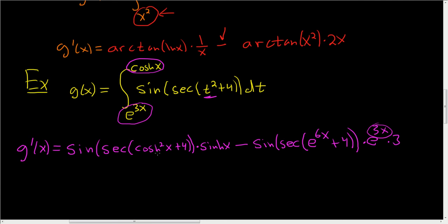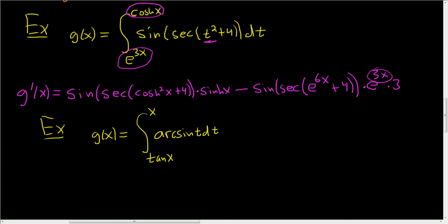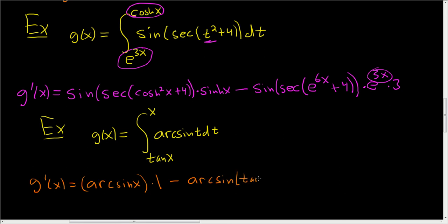I haven't been simplifying any answers — just showing you how to use the formula. Let's do one more. Little g of x equals the definite integral from tangent of x to x of arcsin t, dt. So g prime of x: plug in x for t — arcsin of x — times the derivative of x, which is 1. Subtract, then plug in tangent x: arcsin of tangent x, times the derivative of tangent, which is secant squared x.